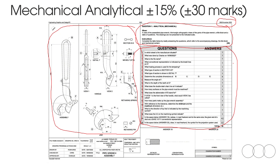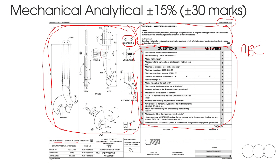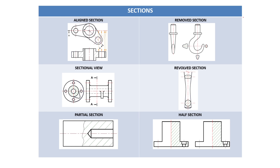When we do the analytical, we write in capital letters. Most of the questions are going to be based on the drawings. My first tip: you will need to know your sections, because they are most likely going to ask you to identify a few. Here is a table with all the sections you need to know: an aligned section, a removed section, a sectional view, a revolved section, a partial section, and a half section. Take note of the correct way to indicate a half section. You can take a screenshot here to study these sections.